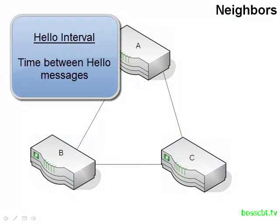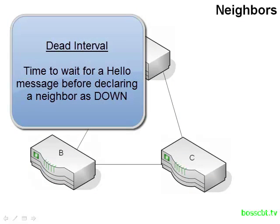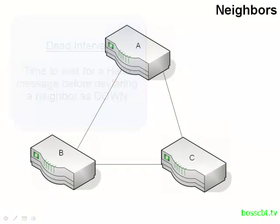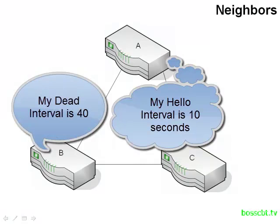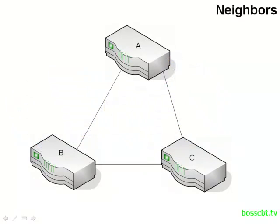The hello interval is simply the timer for sending out hello messages. The dead interval is related to that — it's the time a router will wait to receive a hello before declaring a neighbor is down. The hello interval would tell router A to send a hello message every X number of seconds, and the dead interval would tell router B to wait a certain amount of time to receive a hello from router A. If it doesn't receive it, there might be a problem and router A could be marked as down.